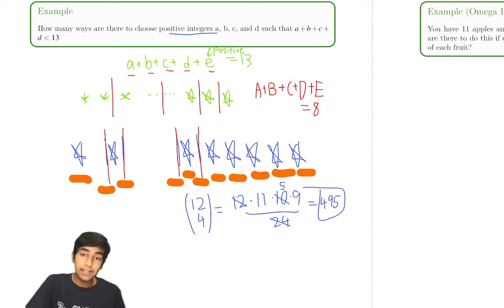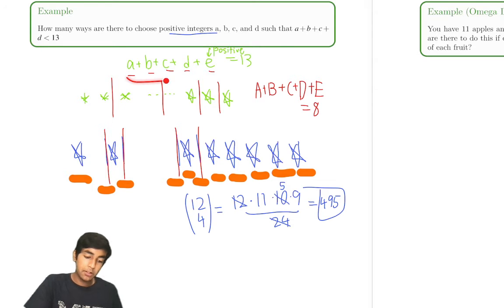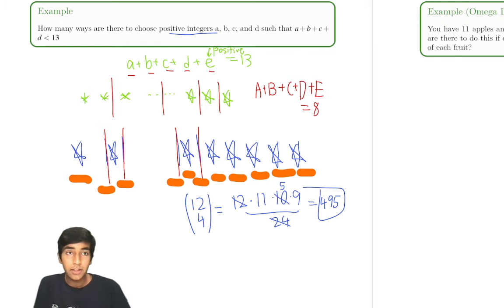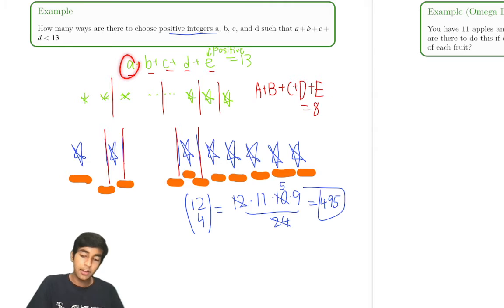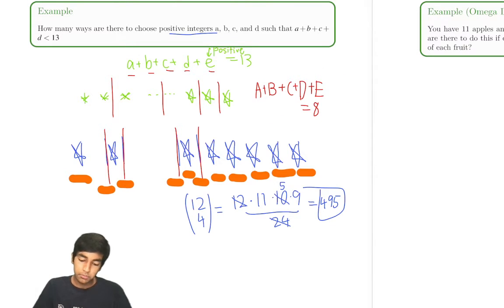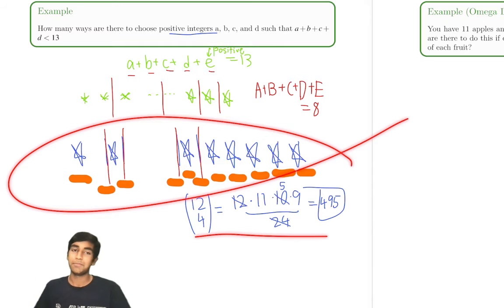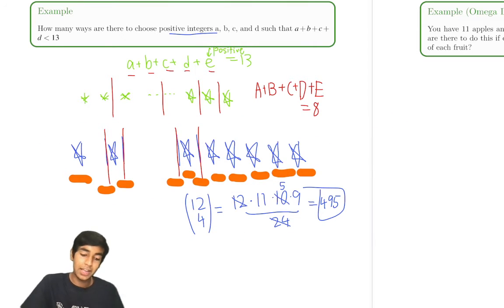The key idea was adding another variable e so that a plus b plus c plus d plus e equals 13, with e a positive integer. Then we subtracted one from each variable for regular stars and bars, giving twelve choose four. A clever introduction of the new variable.